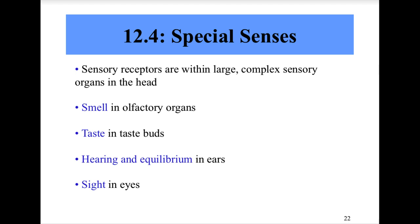Special senses are the senses whose sensory receptors are located in large complex organs in the head. The five special senses include smell in olfactory organs, taste in taste buds, hearing and equilibrium in the ears, and sight, which occurs in the eyes.